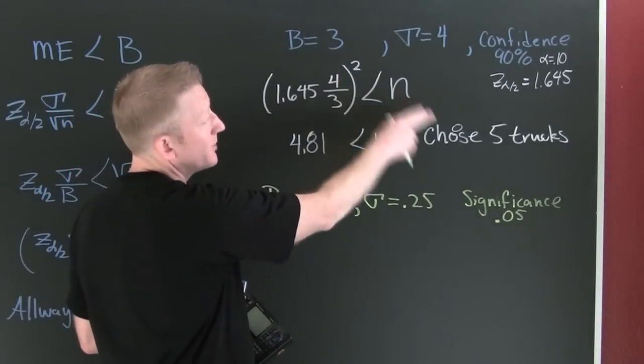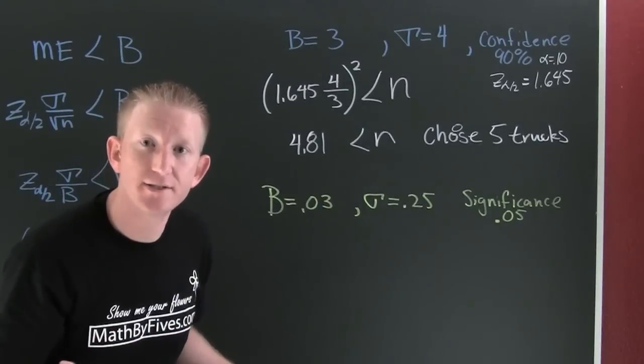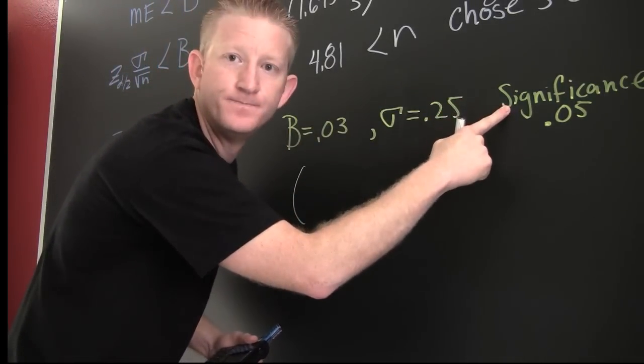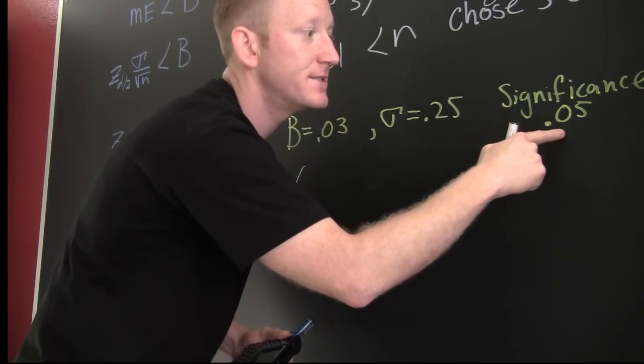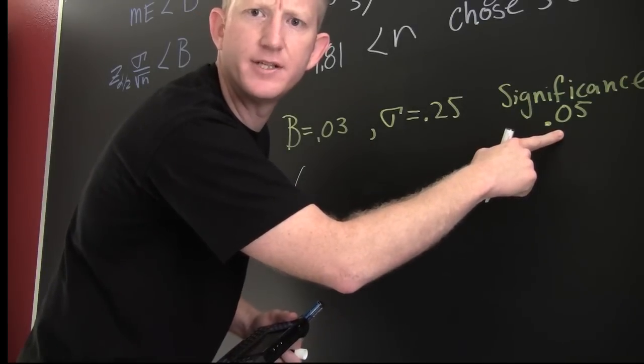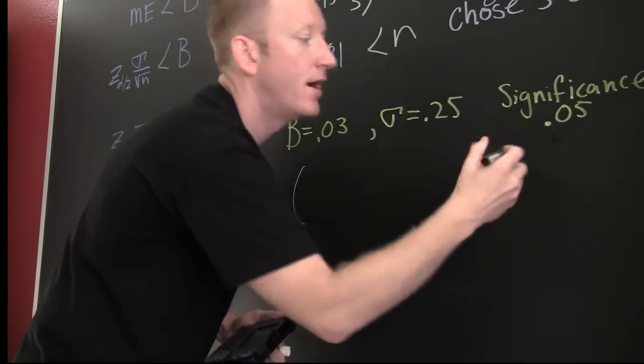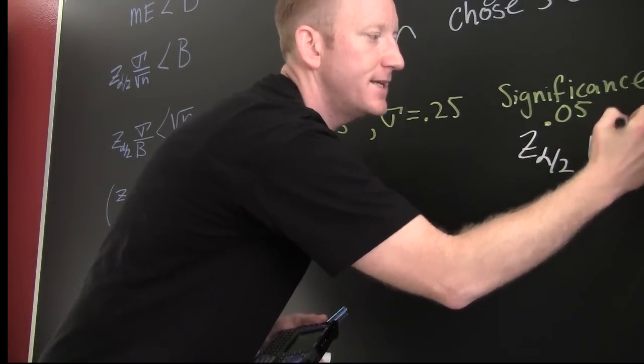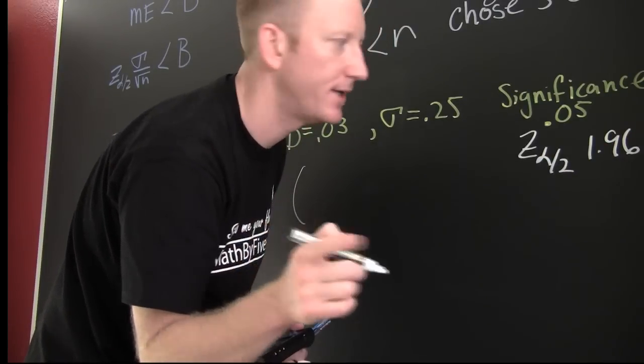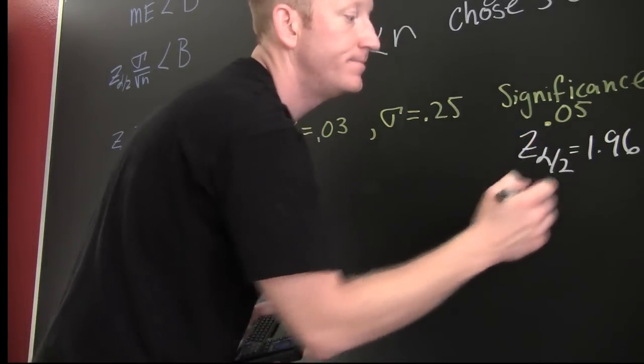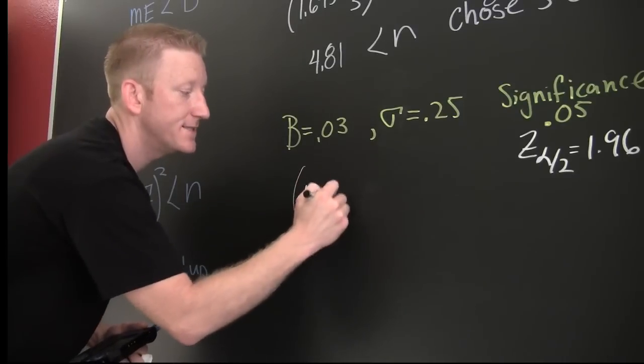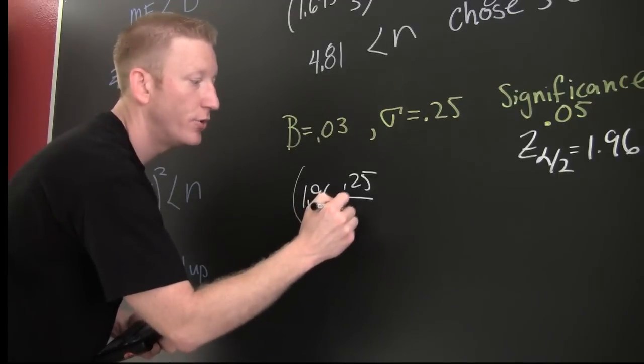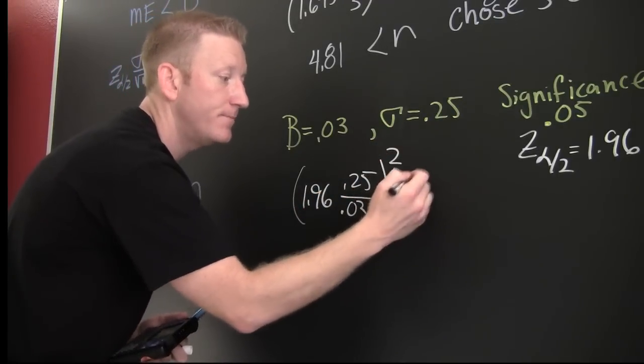Let's see another example down here. Our significance level is 0.05. So this means that's a 95% confidence interval. For a 95% confidence interval, our z alpha over two is 1.96. I think so, you should probably check me on that. So then we're gonna have 1.96 times 0.25 divided by my bound on error, 0.03, and then I'm gonna square that and that needs to be smaller than my n.